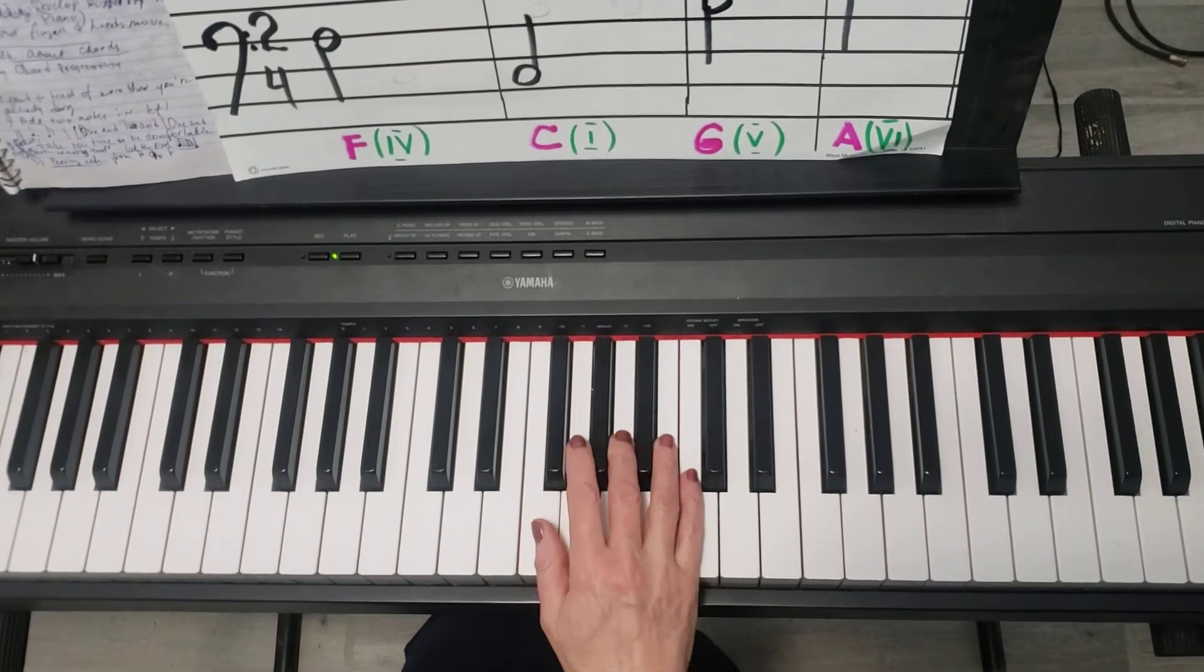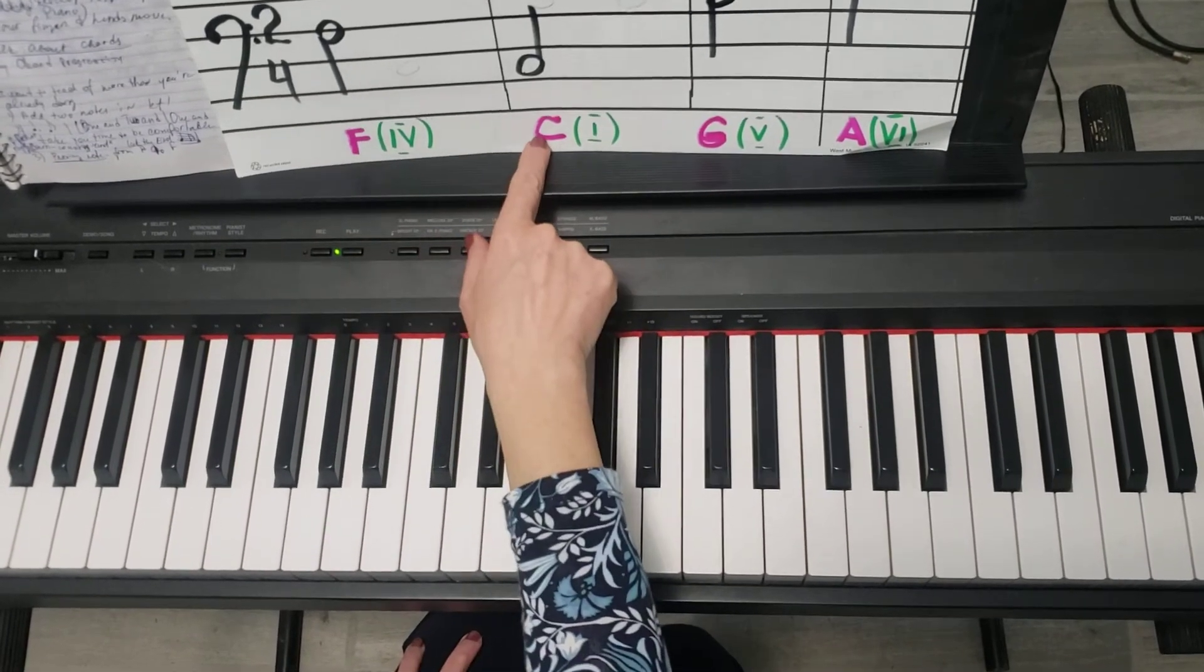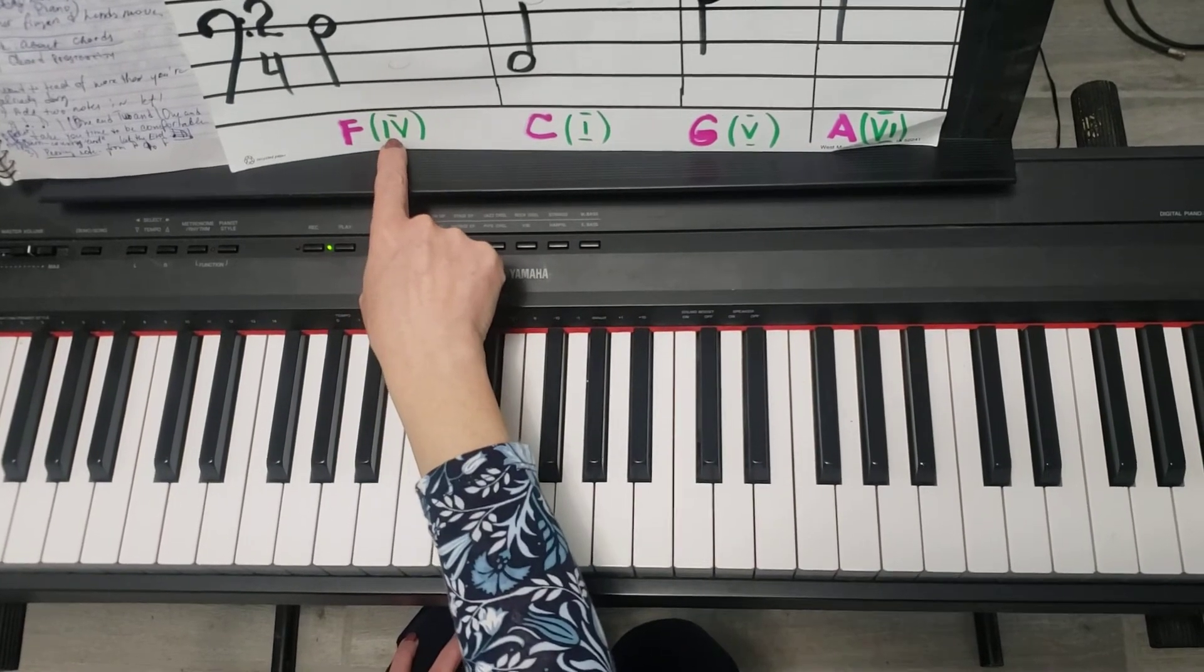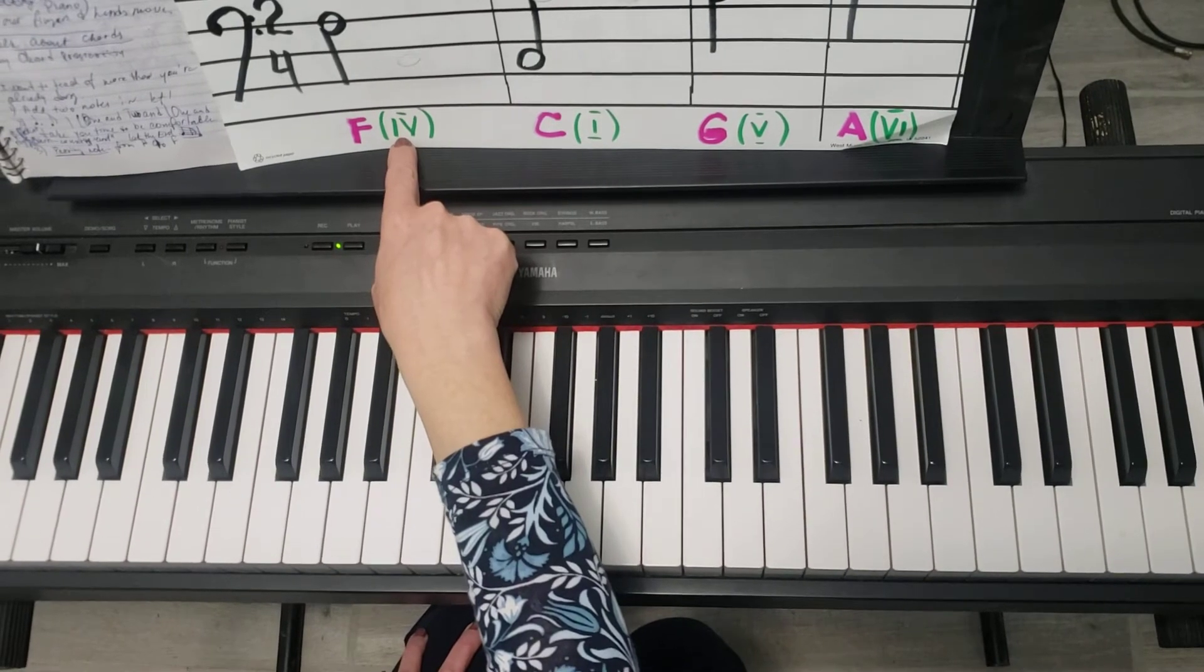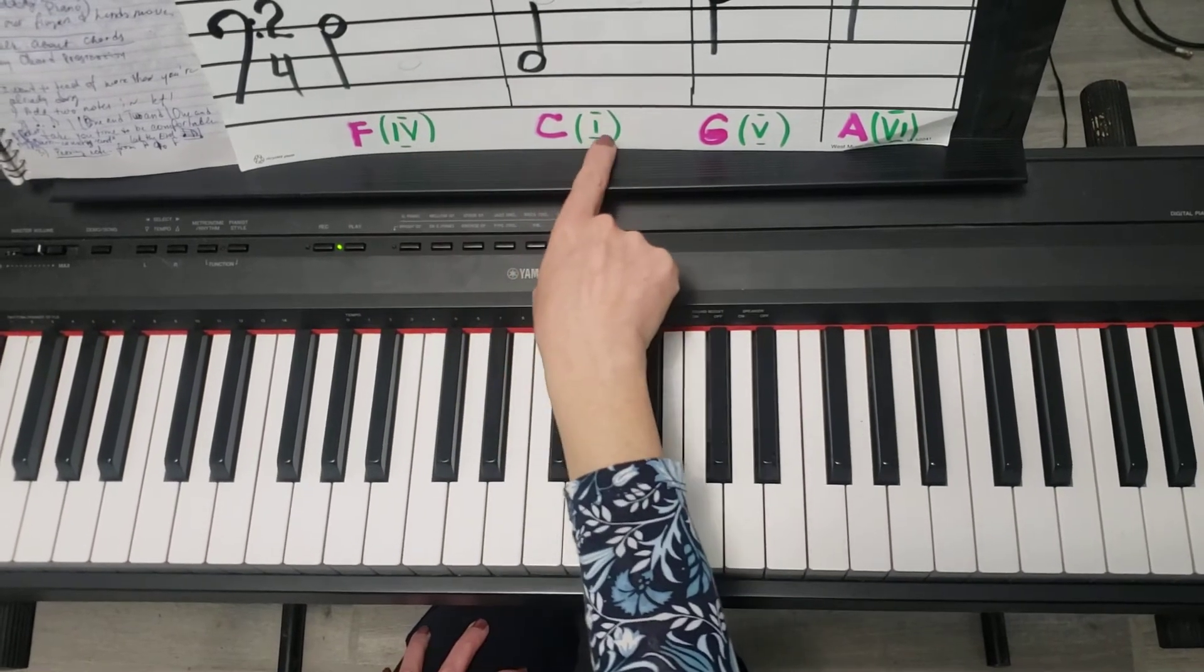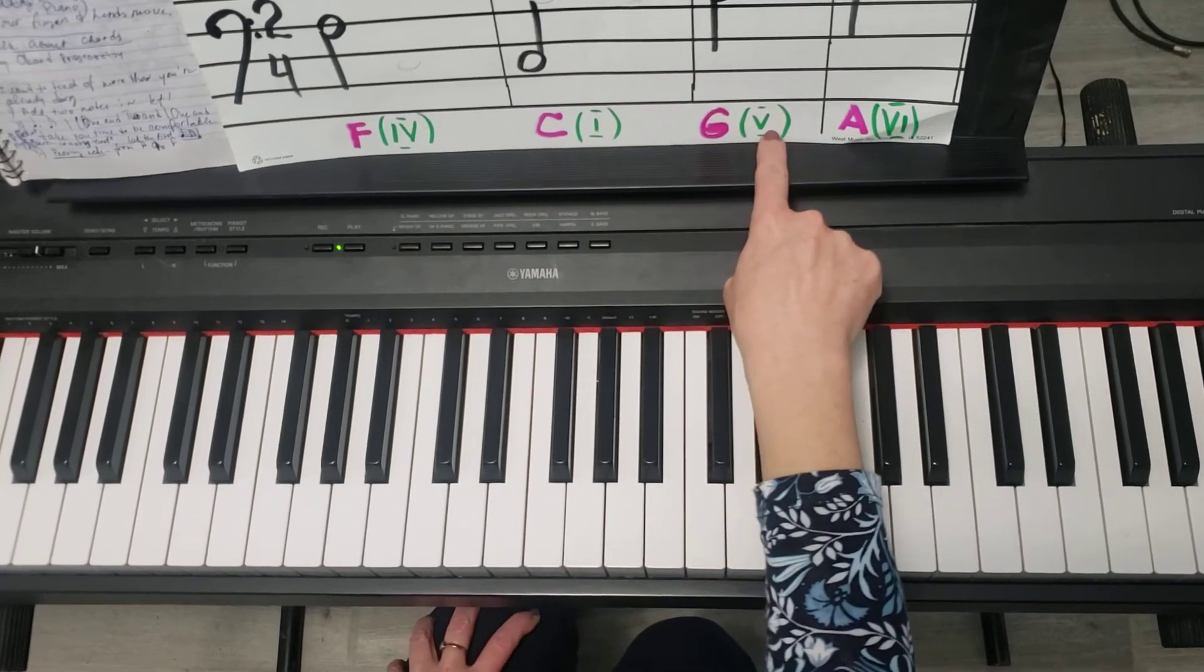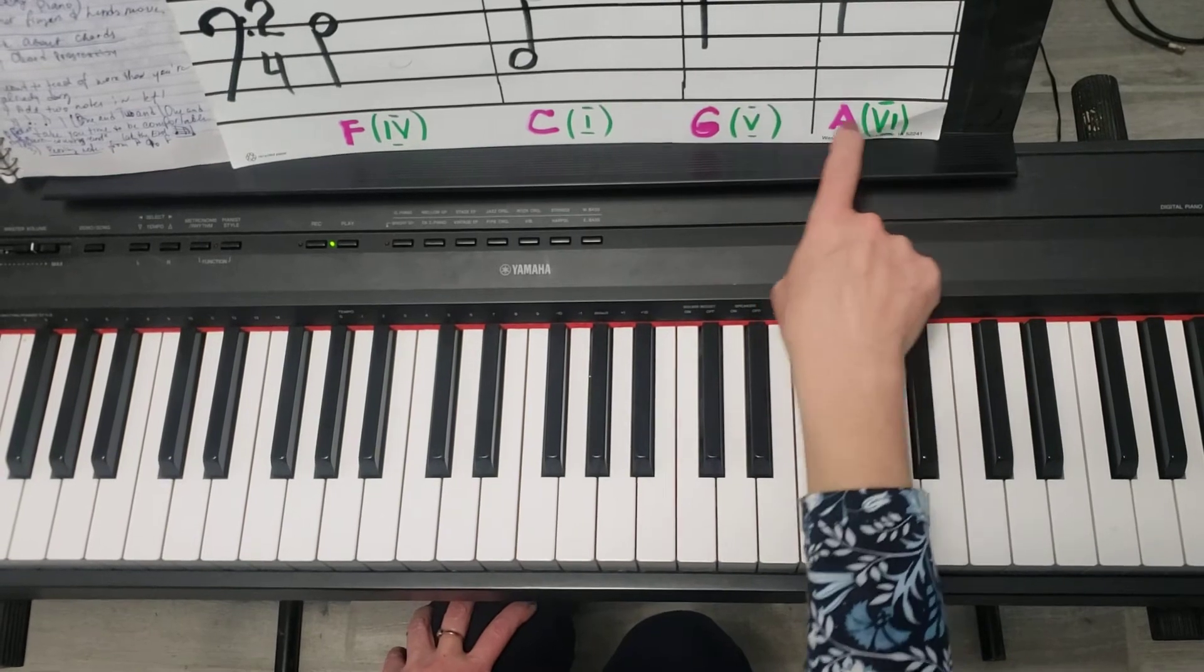So again, the left, I wrote down the root note of which chord and I wrote down the step because F is the fourth step in the C major, C is the first step, C, then G is the fifth step, the chord is on the fifth step and then A is the sixth step.